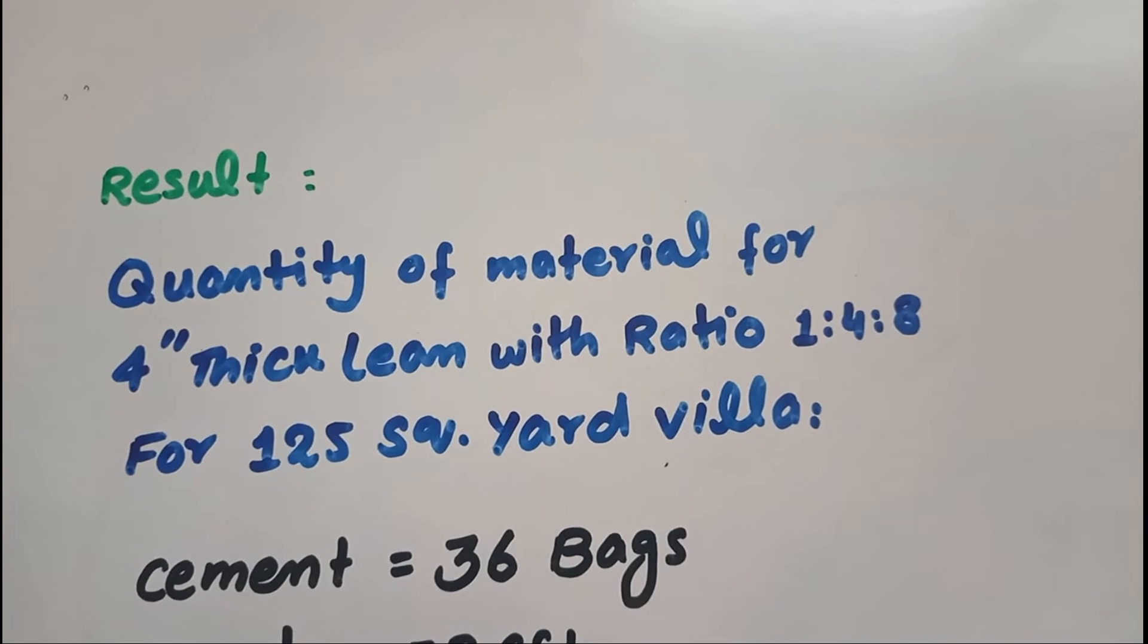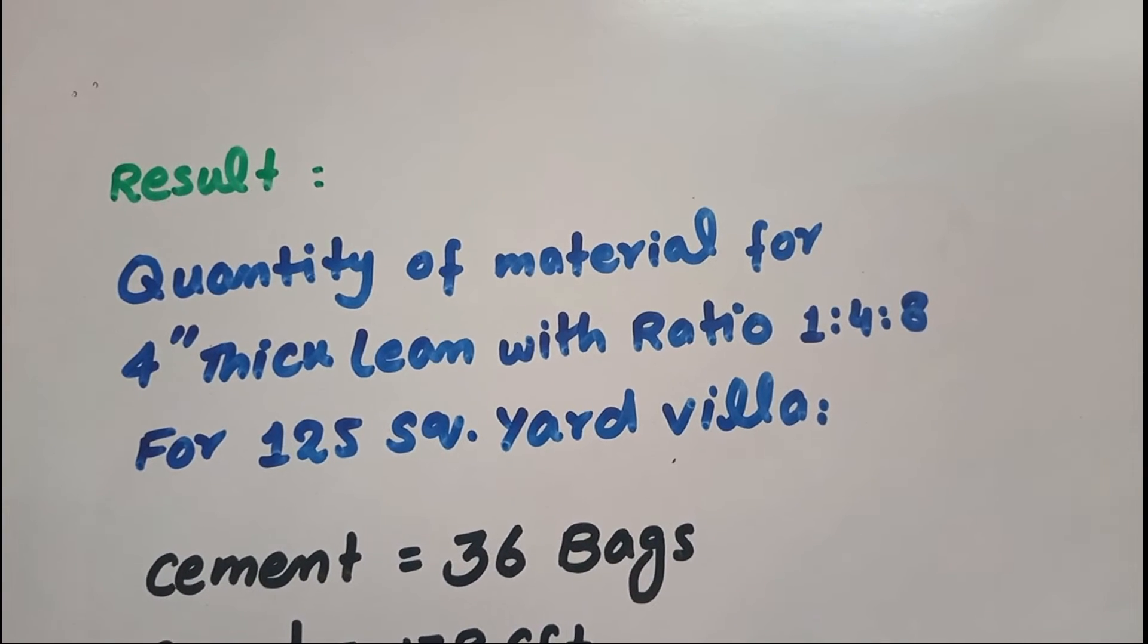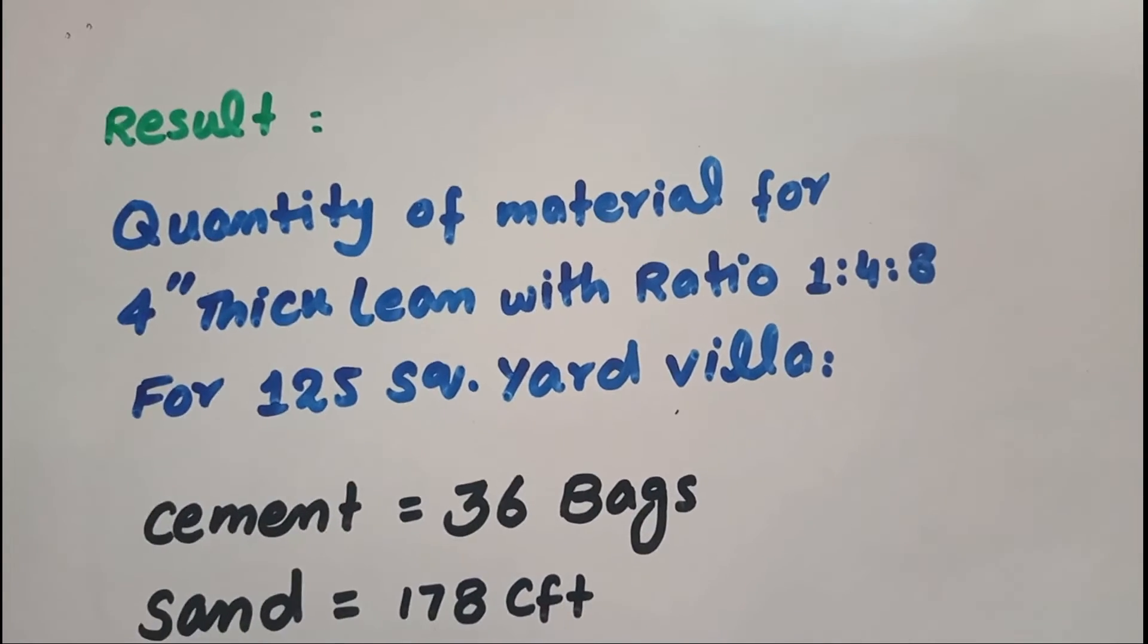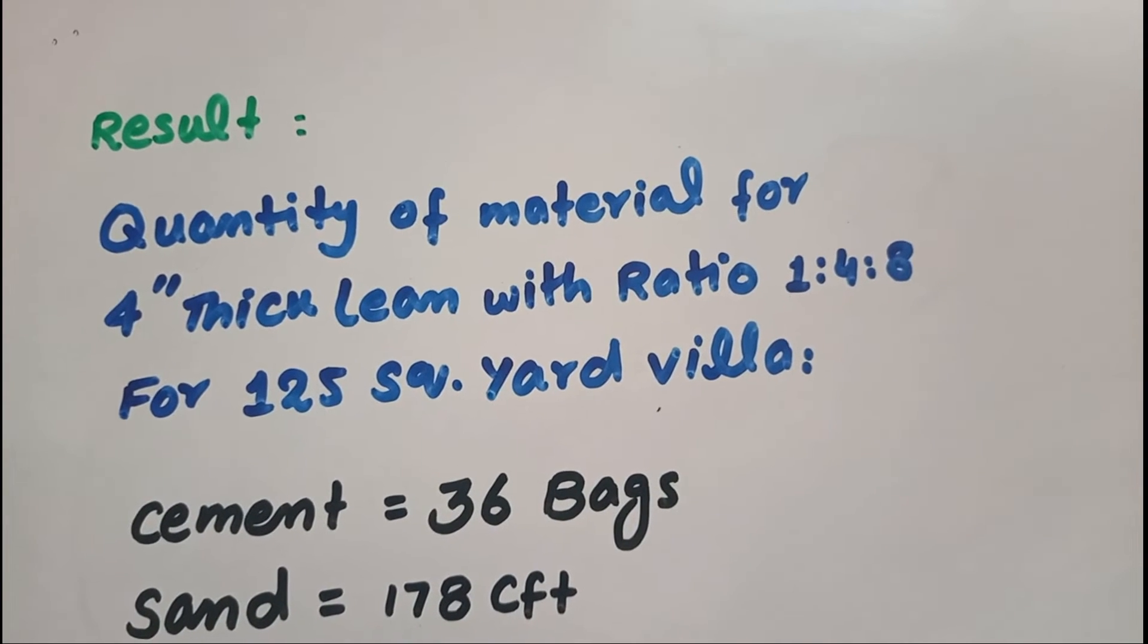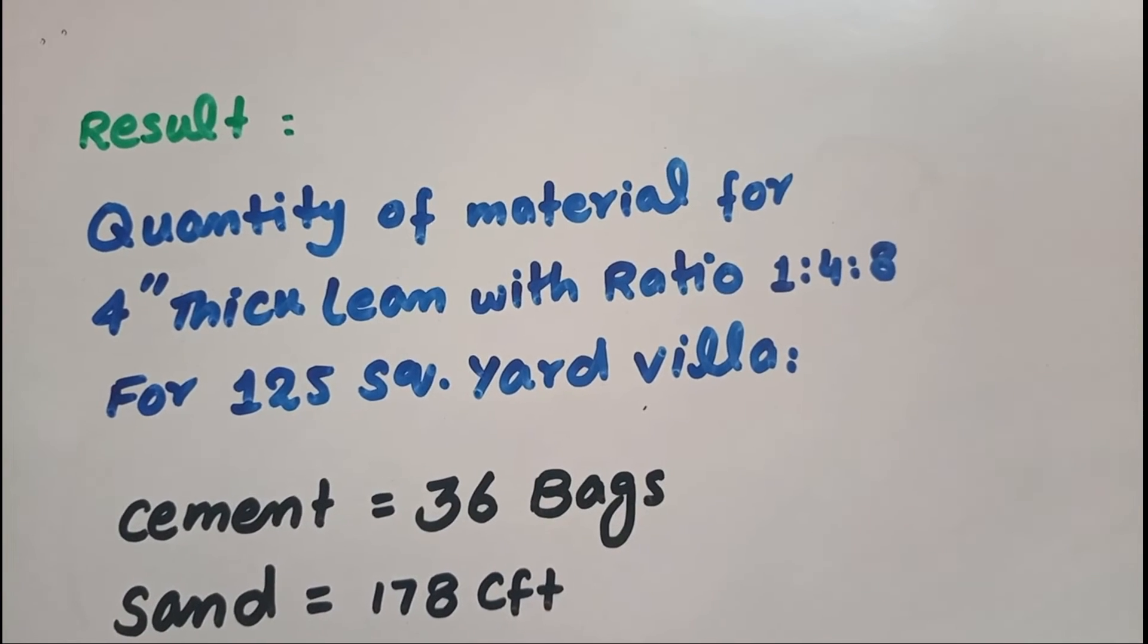Result: quantity of material for four inch thickness of lean with ratio 1:4:8 for 125 square yard villa. Total quantity of cement is 36 bags, total sand used 178 cubic feet, and crush 356 cubic feet.